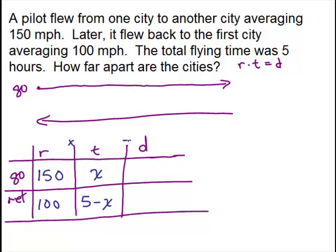So now we know rate times time equals distance. Going, the rate times the time is 150 times X or 150X. The return is 100 times this whole thing, five minus X. You need to put that in parentheses. So it's 100 times five minus X. Now that's not simplified, so let's simplify. I need to do the distributive property. 100 times five is 500 minus 100 times X is 100X.